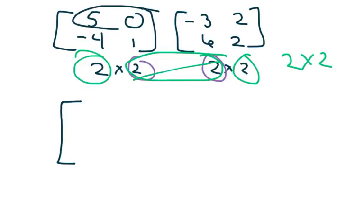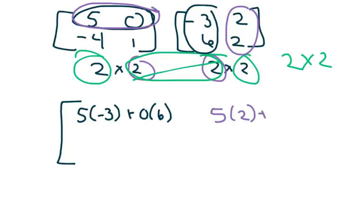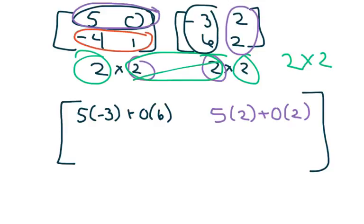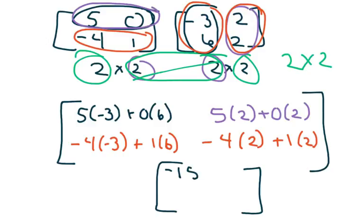Row 1 times column 1: 5 times negative 3, plus 0 times 6. Row 1 times column 2: 5 times 2, plus 0 times 2. Row 2 times column 1: negative 4 times negative 3, plus 6 times 1. Row 2 times column 2: negative 4 times 2, plus 1 times 2. Cleaning this up gives us negative 15, 10, 18, and negative 6.